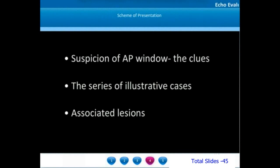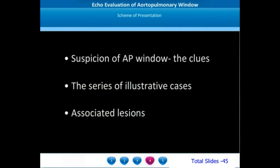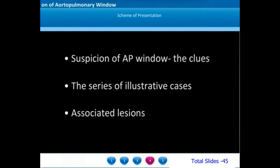In this module, we will initially start with certain clues on how to suspect the presence of an AP window, then go on to show a series of illustrative cases of proximal AP window, distal AP window, and complete total AP windows, and also mention a few slides about the associated lesions.